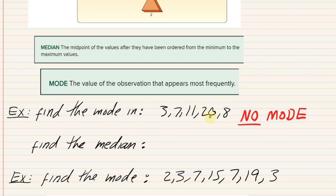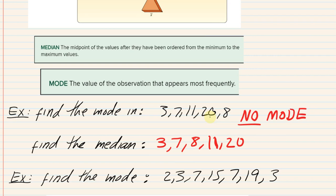For the median of the set 3, 7, 11, 20, and 8, just saying the middle value would be incorrect without ordering first. We need to sort from low to high: 3, 7, 8, 11, 20. Now that it's ordered, the middle value — the median — is 8. That's the center of our data according to the median. The values of mode, median, and mean are usually not the same — very seldom are they exactly equal unless we deliberately create that situation.